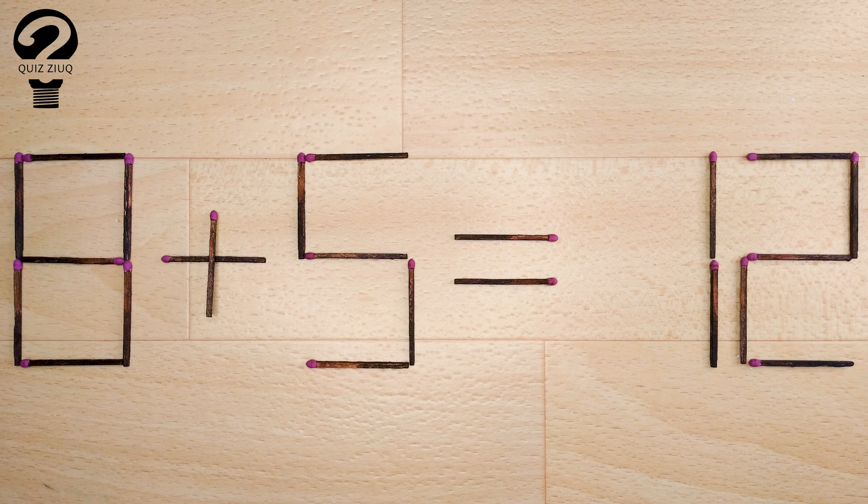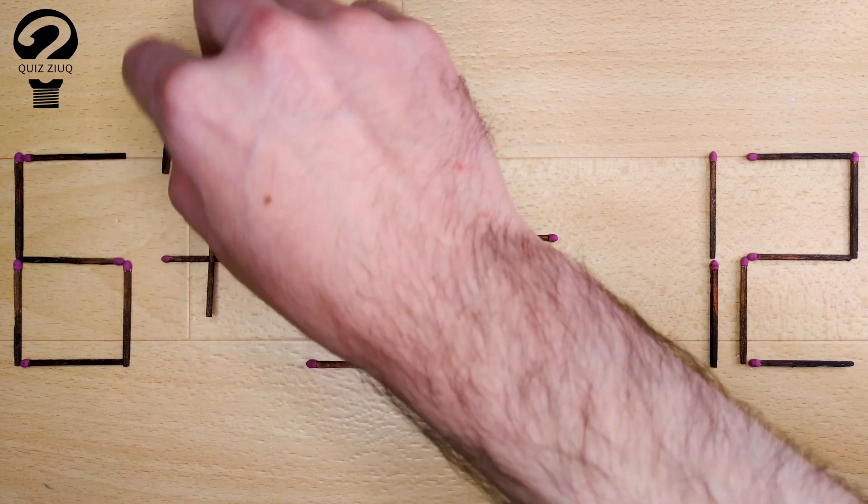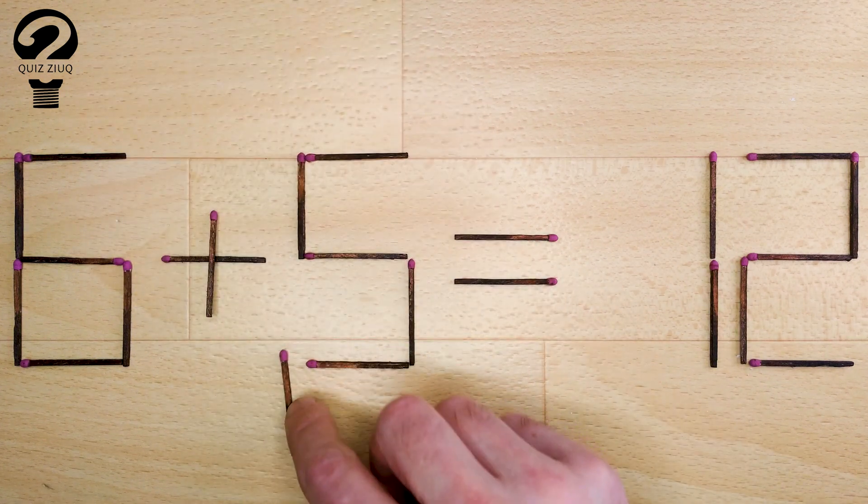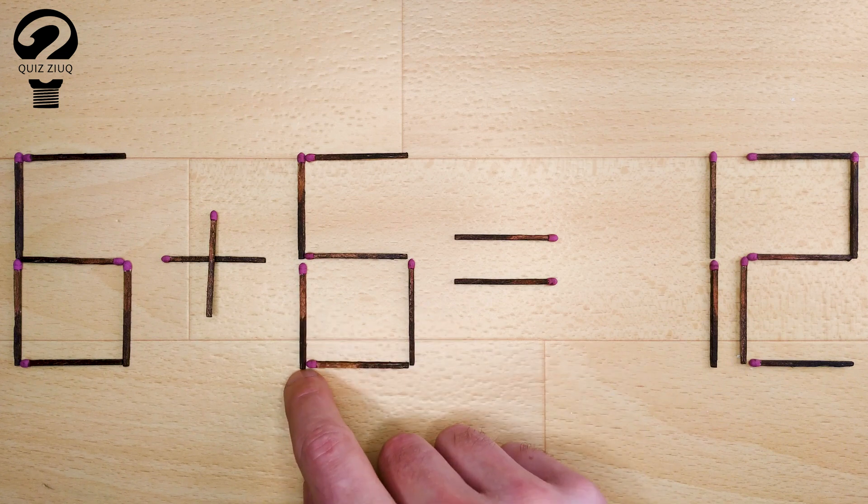How is this little puzzle solved? All we need to do is move one matchstick. And now, when we check, 6 plus 6 equals 12. 12 equals 12. Our equation is correct.